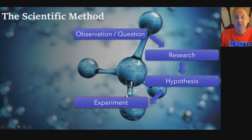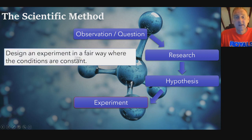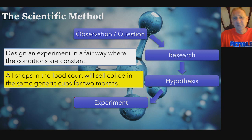You come up with an experiment next as we go through the scientific method. We design an experiment in a fair way to where the conditions are constant. We're going to design our experiment in a fair way and try to keep the conditions as constant as possible. My idea for this was what if we made all the shops in the food court sell their coffee in the same generic cups for two months. If you got it at Starbucks, if you got Baskin-Robbins, Dunkin' Donuts, Subway or Taco Bell, everybody's using the same exact cup for two months. That would be my experiment to test my hypothesis that they're buying it only for the name. You take away the name, let's see what happens.